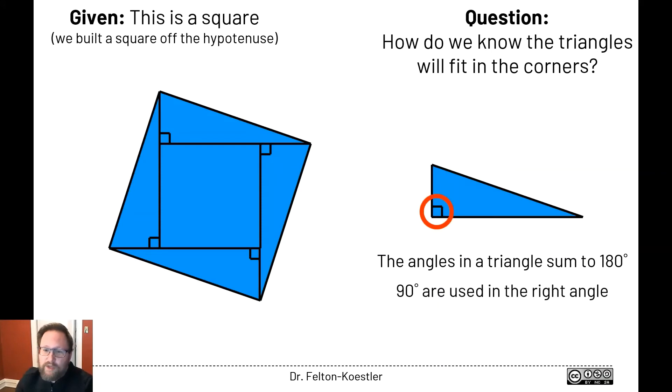We've already used up 90 degrees with our right angle, so that leaves us these two angles, x and y. Since we've already used up 90 degrees, we know that these other two angles have to add up to 90 degrees.